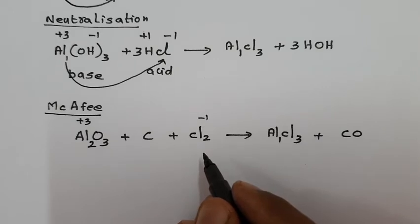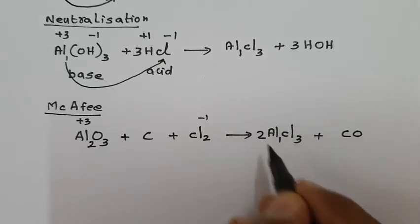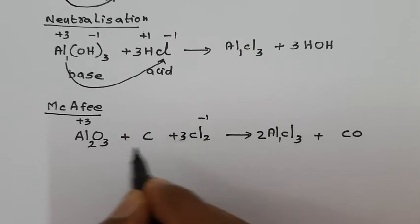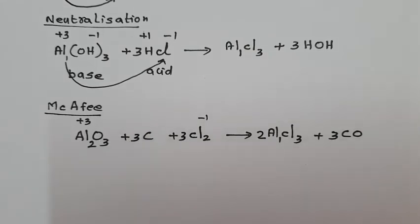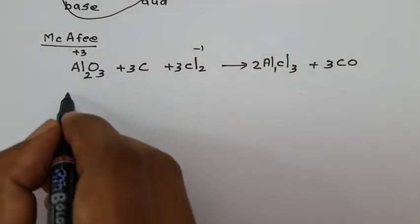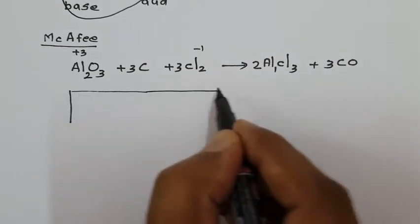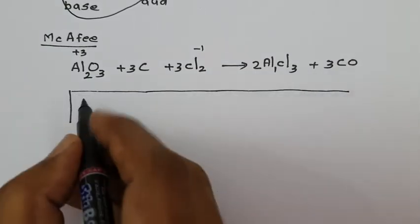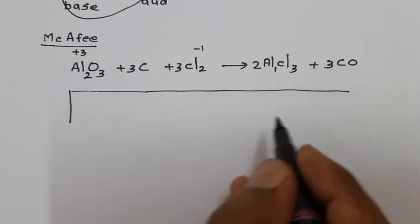Balancing the McAfee reaction: 2 Aluminium, 2×3=6 Chlorine, 3 Oxygen, 3 Carbon. This is analogous to the preparation of Boron Trifluoride — for BF₃, instead of Al₂O₃ we use Boron Trioxide (B₂O₃), and instead of Cl₂ we use F₂.